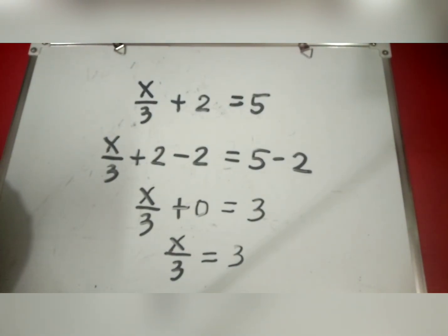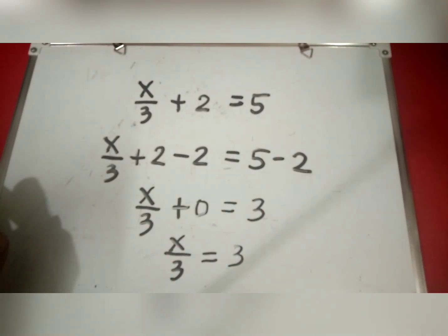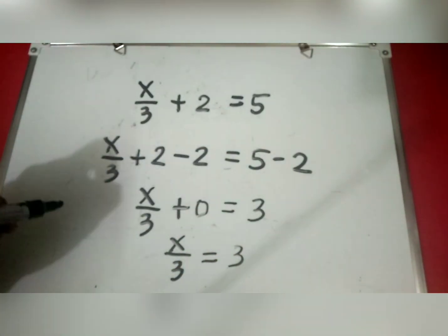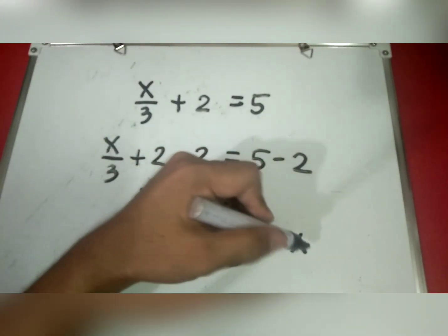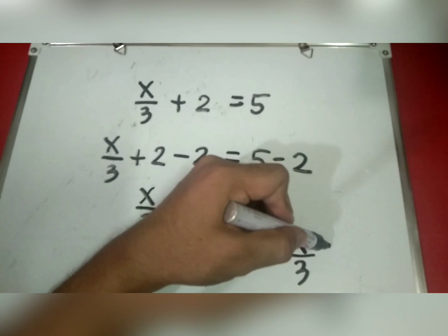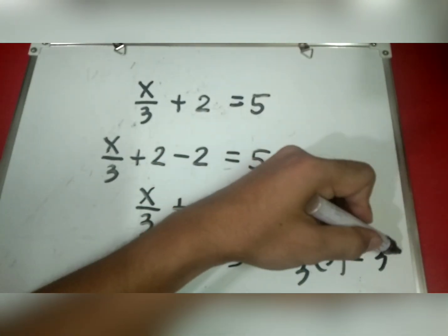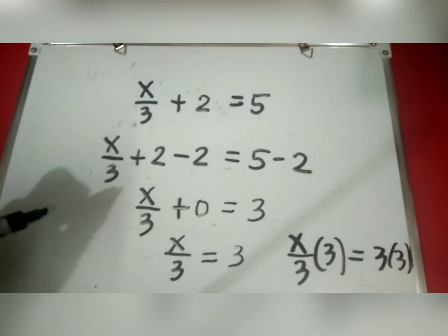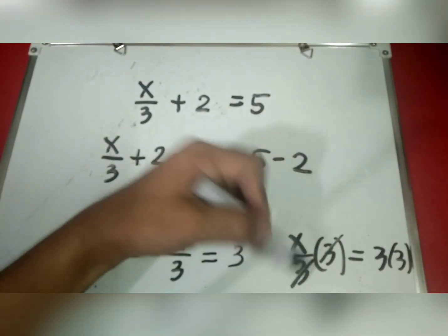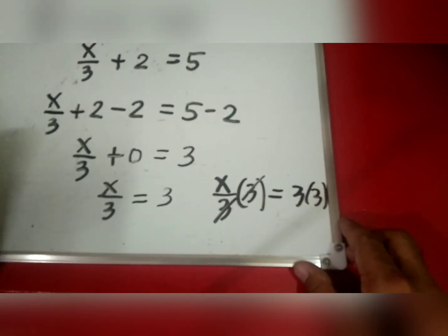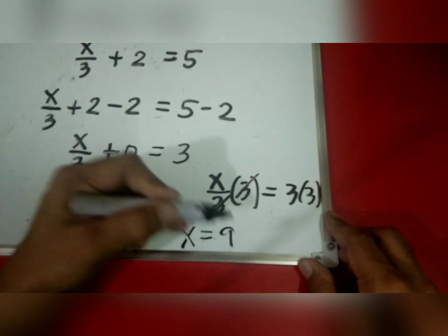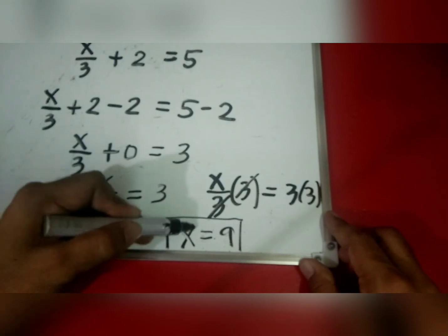Now we need to find the value of x, and we have the denominator 3 on the left side. To cancel the 3 in the denominator, we multiply both sides of the equation by 3. So x over 3 times 3 equals 3 times 3. Cancel the 3, and we have x equals 9. So the value of x equals 9.